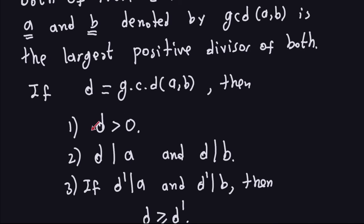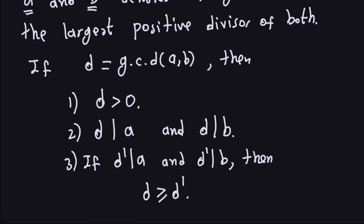The first property is it has to be a positive number — we're always going to get a positive number out of the greatest common divisor. It also has to divide both of them; this vertical bar notation means D divides A, and also D has to divide B. That's not enough, because it has to be the largest divisor. The third condition assures you have the largest divisor: if D prime is some other integer that divides A and also divides B, then D, because it's the largest, has to be greater than or equal to D prime.